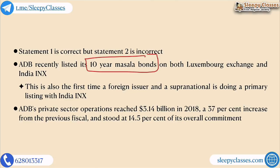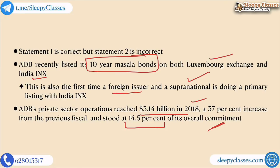ADB recently listed 10-year Masala Bonds on Luxembourg Exchange and India INX. Regarding India INX, this was the first time that a foreign issuer — a supranational entity — chose India INX for a primary listing. The second statement was that ADB's private sector operations are higher than public sector ones. ADB's private sector operations were around 3.14 billion (2018 data), which saw around a 37% increase, but overall it is only 14.5% of its total commitment, meaning the private sector is quite small compared to the non-private sector.